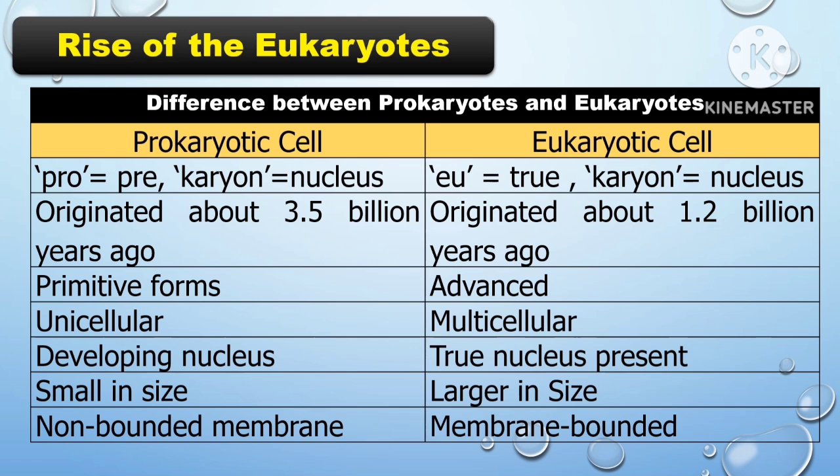For the eukaryotic cell — 'EU' means true and 'karion' means nucleus — it is originated about 1.2 billion years ago. It is advanced, has multicellular cells, and true nucleus present. It has larger size and membrane-bounded organelles.